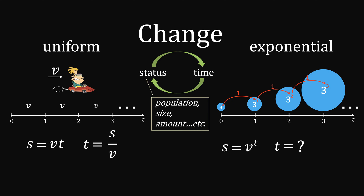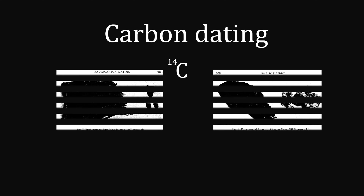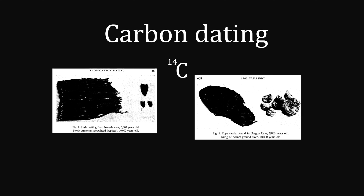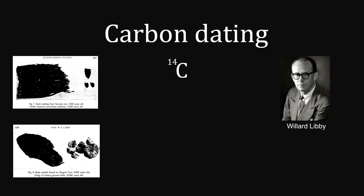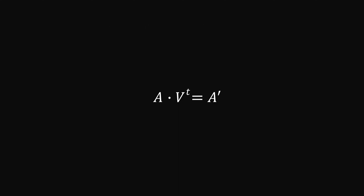Solving this is no longer a simple division problem. A real-life application is the carbon dating technique, where the amount of carbon-14 is used to date artifacts. It was invented by the American chemist Willard Libby, who won the Nobel Prize in 1960. Simply speaking, these artifacts have carbon-14 atoms which decay over time. You can measure the speed of decay. The original amount goes through that decay for a certain time to become the final amount, giving us an exponential relationship between time and status.